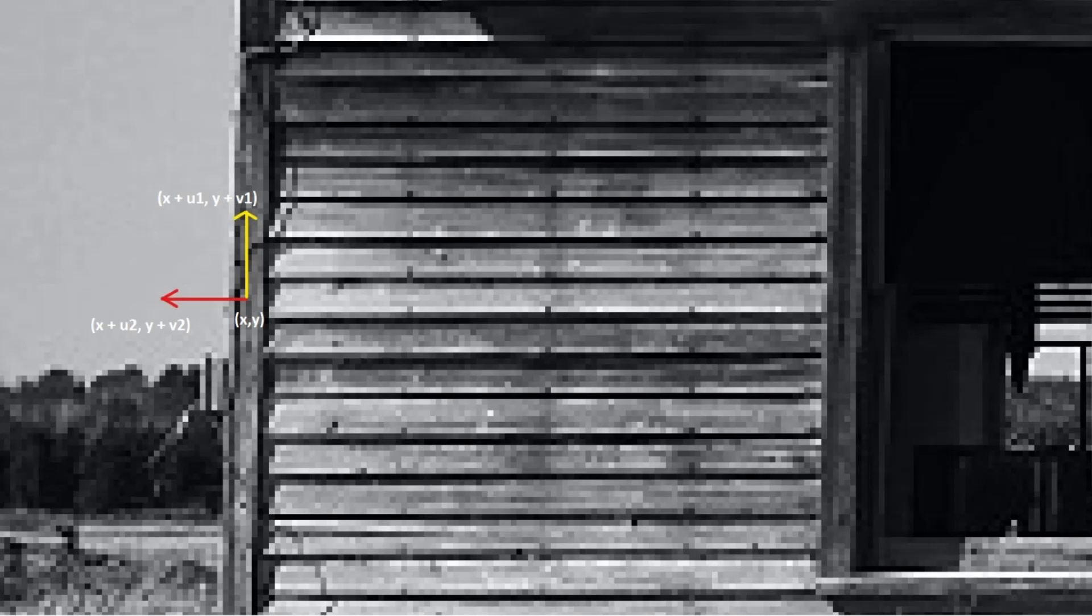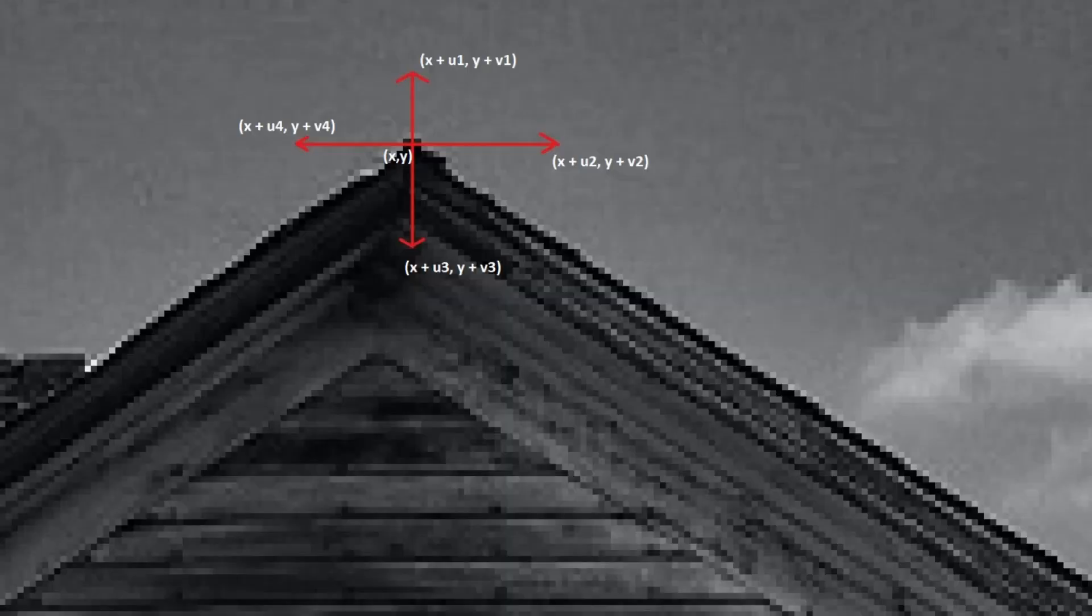Now let's look for corners. You can see the change in intensity in multiple directions. These points are treated as corners. For flat regions, there will be no change in intensity in any direction.